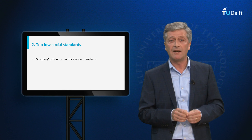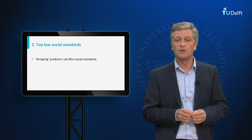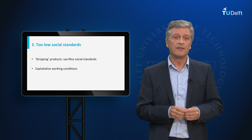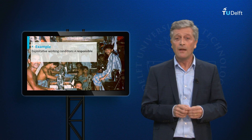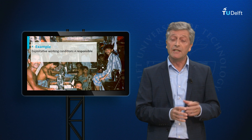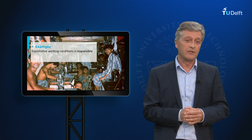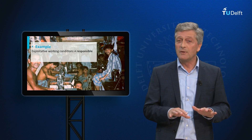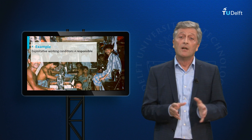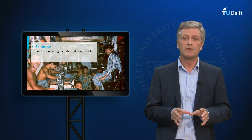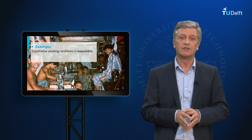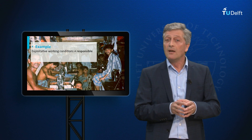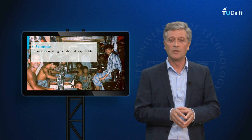When frugal innovations are based on stripping higher value products, one of the first things that producers may sacrifice are social standards like minimum wages for workers, and they may cut back on health and safety conditions in order to reduce costs. For example, frugal innovations produced in the informal economy may actually not protect workers against exploitative working conditions. In such situations of too low social standards, frugal innovations cannot be seen as responsible innovations. This is not a simple yes or no issue, but a matter of trying to ensure as decent as possible working conditions. One cannot only look at the technological or ethical dimensions of the product as such, but also needs to consider under what social conditions these frugal innovations are produced.